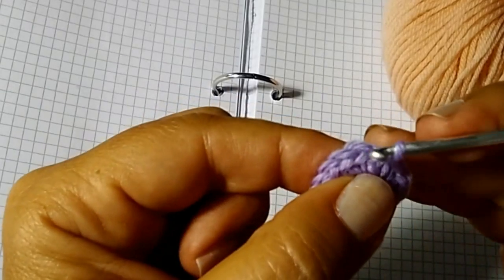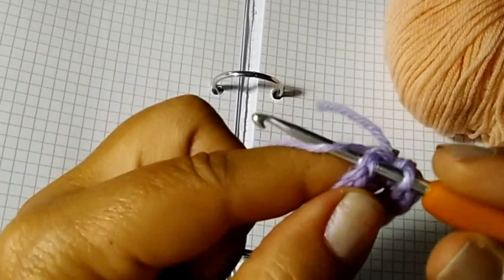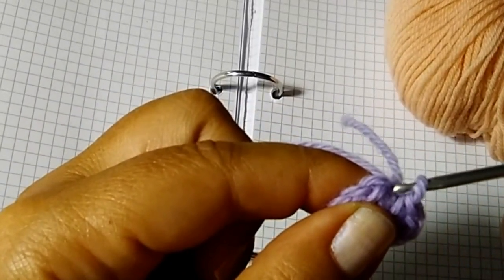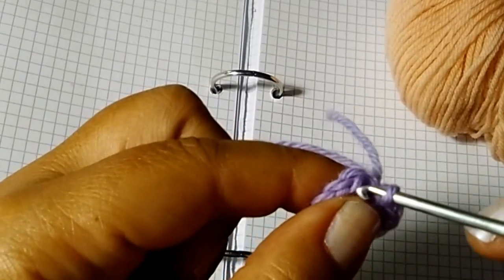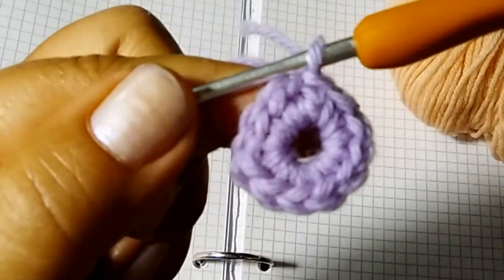Unite in cerchio con una maglia bassissima nella prima maglia bassa d'inizio giro, non nella catenella ma nella - questa è la catenella, questa invece è la prima maglia bassa. Pronti per il giro numero 2.